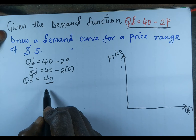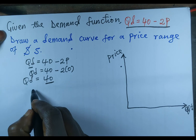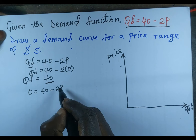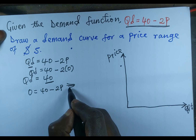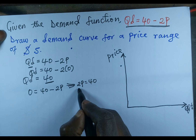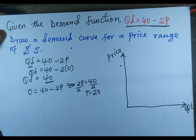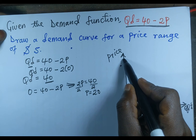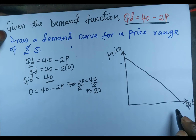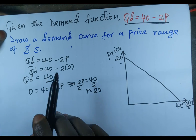Now let's find the price intercept. We look for the point where quantity demanded is zero, so we set 0 = 40 minus 2P. That gives us 2P = 40, and dividing both sides by 2, P = 20. So on the price axis we plot 20, and on the quantity axis we have 40.